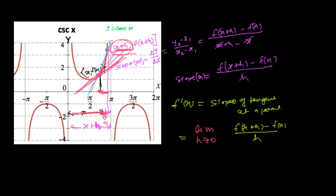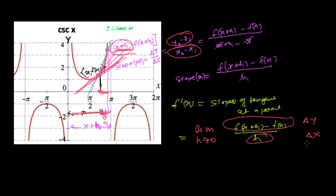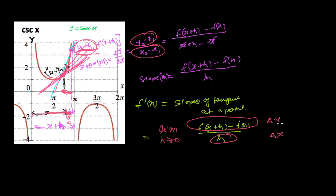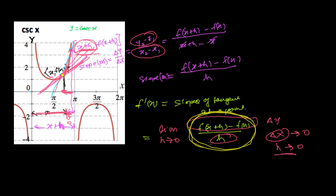The derivative is defined as the rate of change of the function. This is y₂ minus y₁ over x₂ minus x₁ — the difference in y-coordinate over the difference in x-coordinate, which is delta y over delta x. When h tends to zero, the two points merge into one point, and we get the slope at that single point — the rate of change at a point.